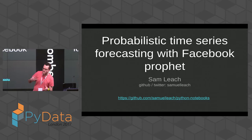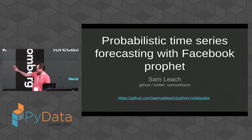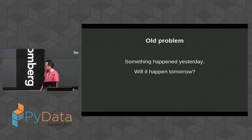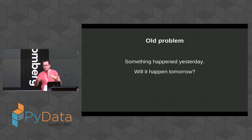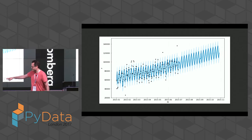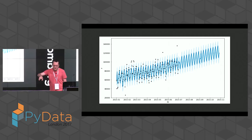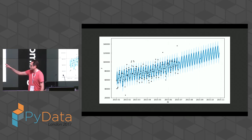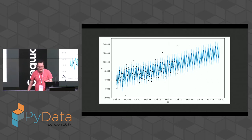I'll unpack that. This is just me kicking the tires on a package that Facebook released about three months ago. So it's my details here and there's a notebook you can find with this sort of material. It's this old problem: if something happened yesterday, will it happen tomorrow? Here's some time series data — Uber New York data with number of trips on the Y axis. This package tries to model that time series data so you can predict growth, which is useful for modeling demand for these types of services.